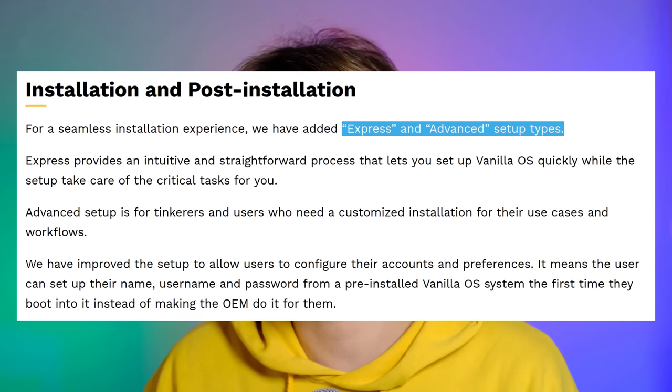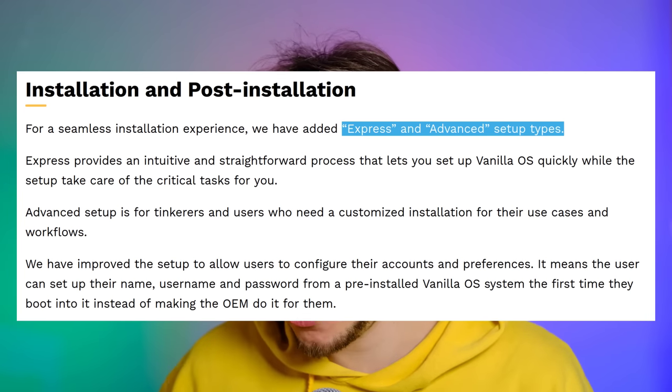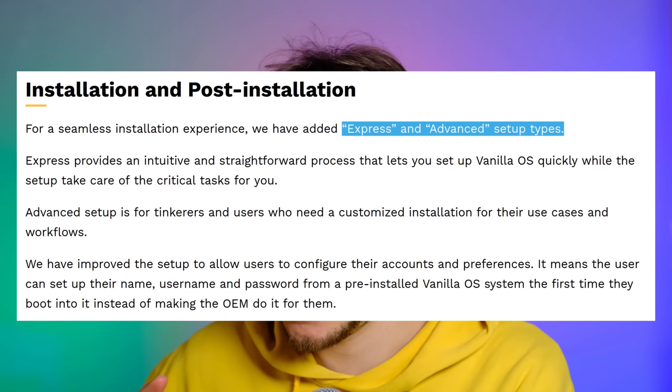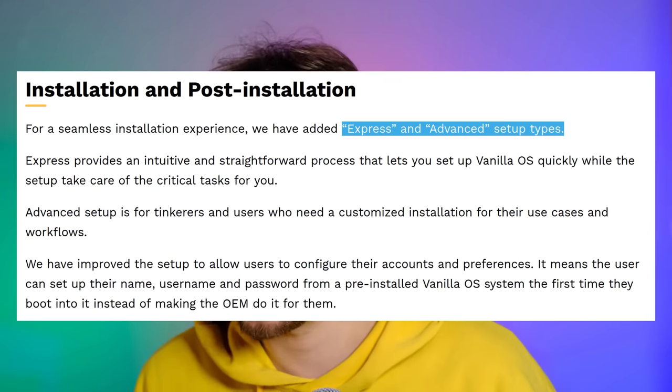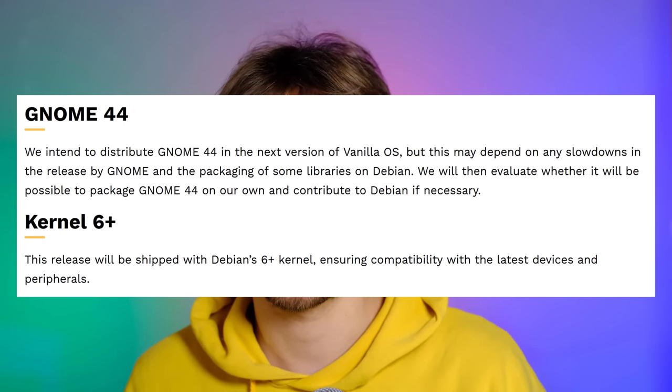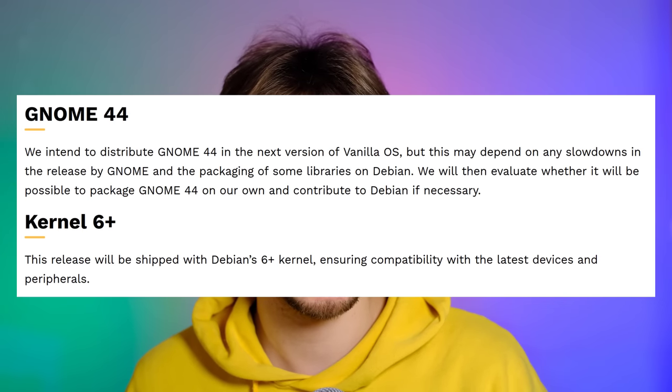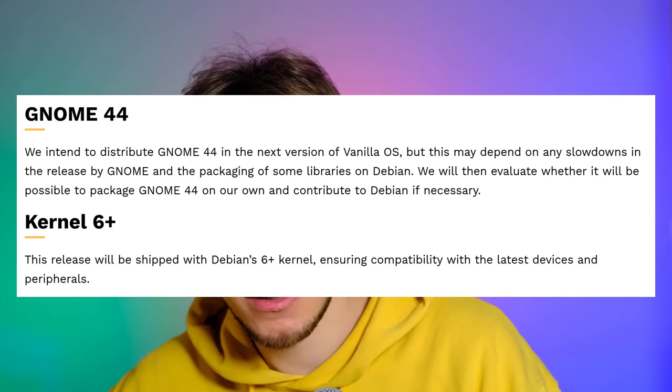But there are more changes coming to version 2.0. The installer now has two views: Express and Advanced. Use Express if you want to get done with it quickly, and use Advanced if you want to tinker a bit with the system. Additionally, Vanilla OS 2 will come with GNOME 44 and kernel 6 or higher.